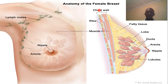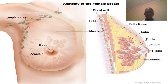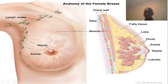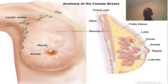This is a cross-section of the breast. The anterior view shows the axillary lymph nodes — that is why you palpate in the axilla during breast examination. The cross-section should show the ribs, muscles, fatty tissue, lobes, ducts, areola, nipple, and lobules — all clearly visible to the examiner.